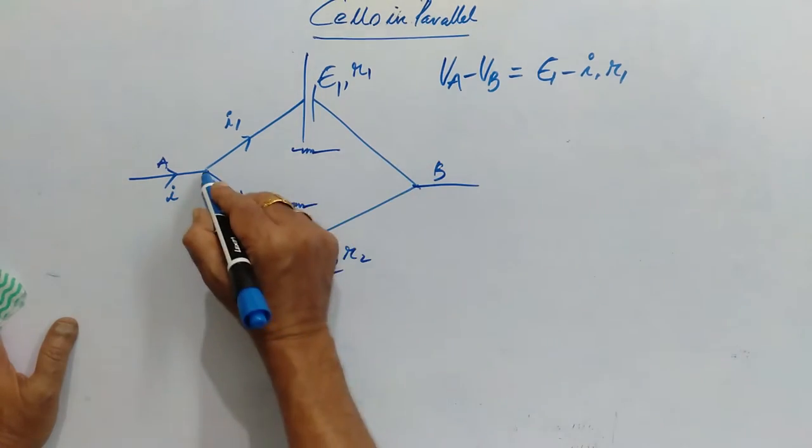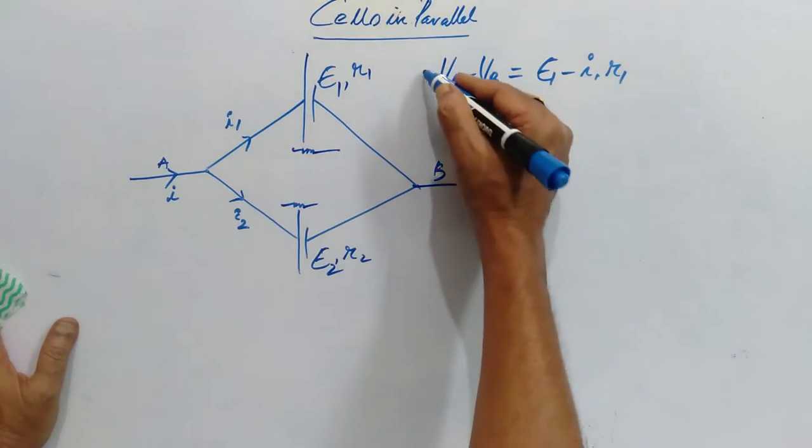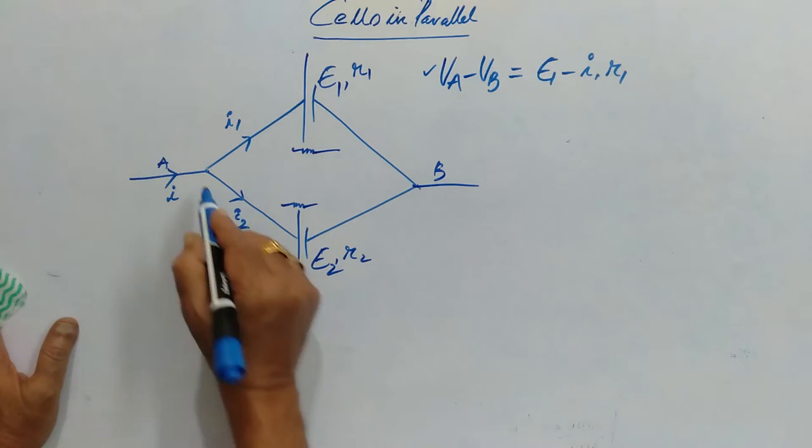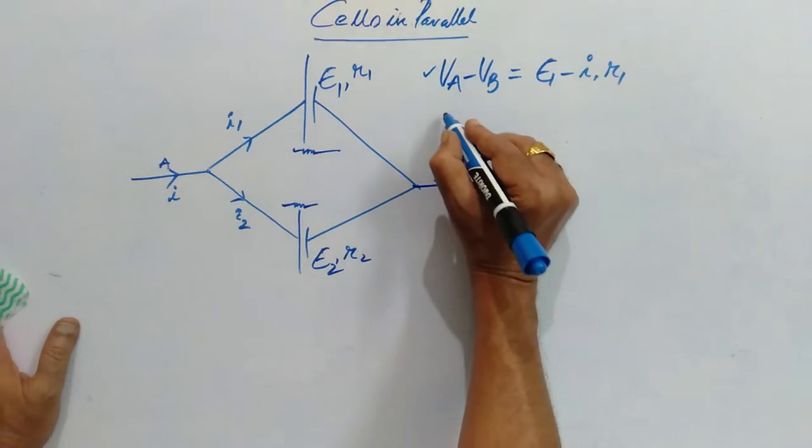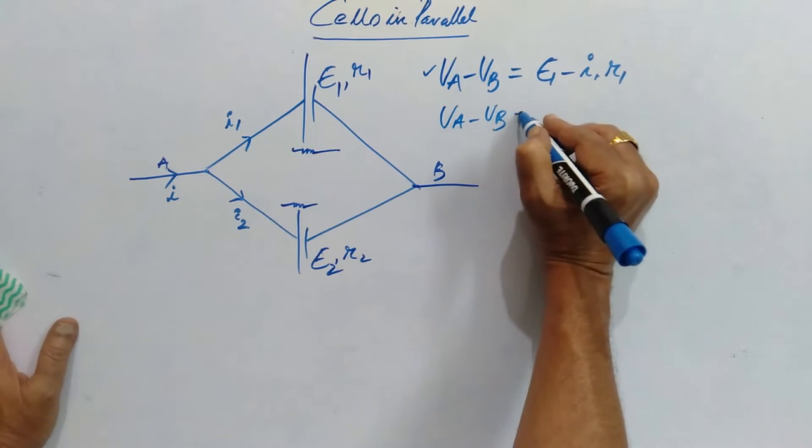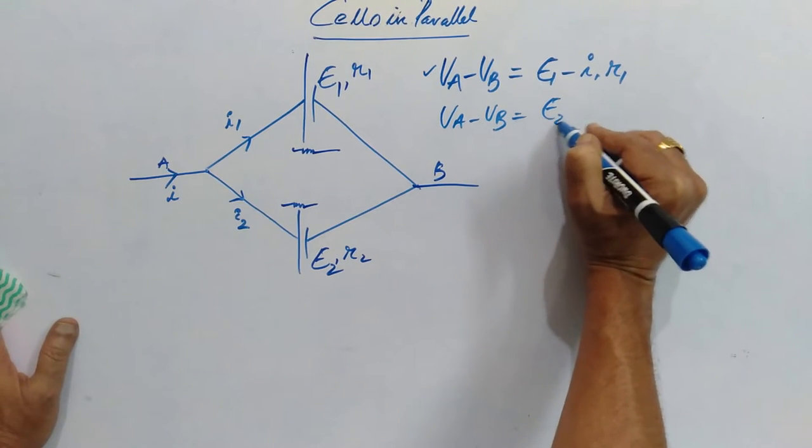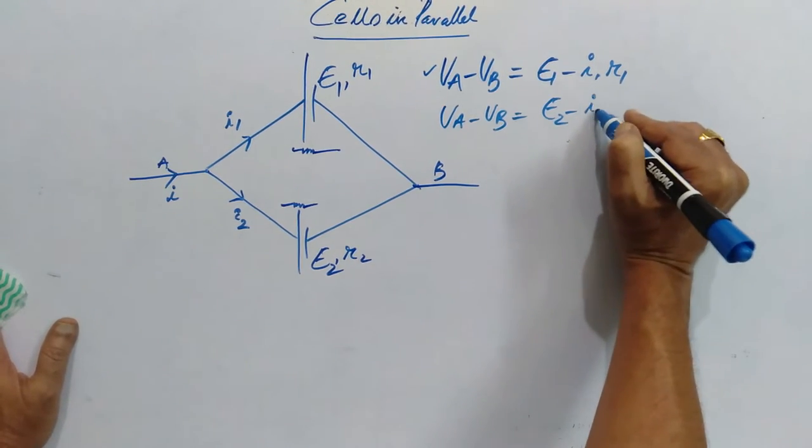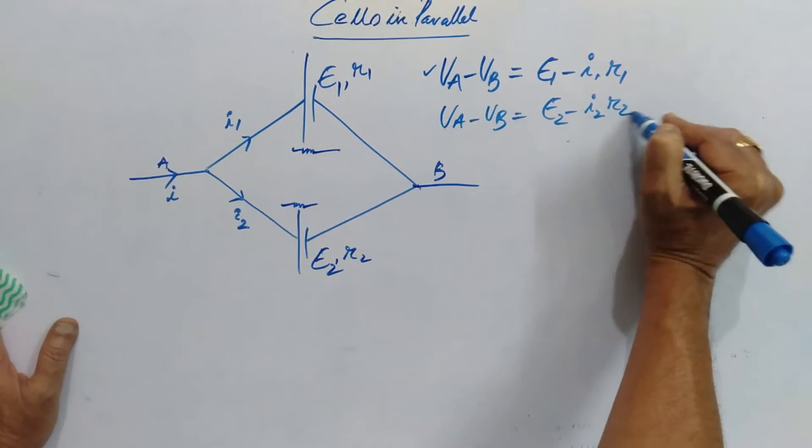Next, if I follow this path, I can get this equation. I can also follow this path. In that case, VA minus VB is equal to E2 minus I2 R2.